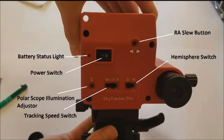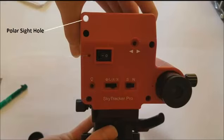This photo shows all the electronic controls on the mount. The battery status light indicates if the battery is well charged or requires charging. The polar scope illumination adjuster activates and adjusts the amount of light in the polar scope. The tracking speed switch adjusts the tracking speed for solar, lunar, celestial, or half-celestial speed. The hemisphere switch should be adjusted depending if you are in the north or southern hemisphere. Pressing and holding the RA slew button will slew the RA axis at 180 times speed. Pressing a second time will slew in the other direction. This also shows the polar sighting hole which will be used to roughly sight Polaris or sigma octantis.